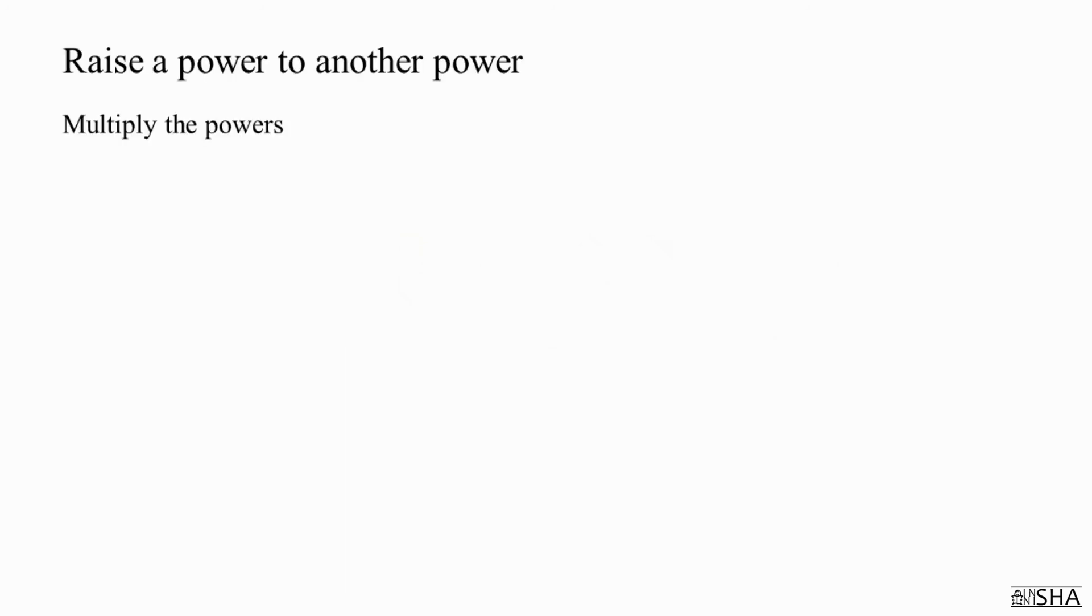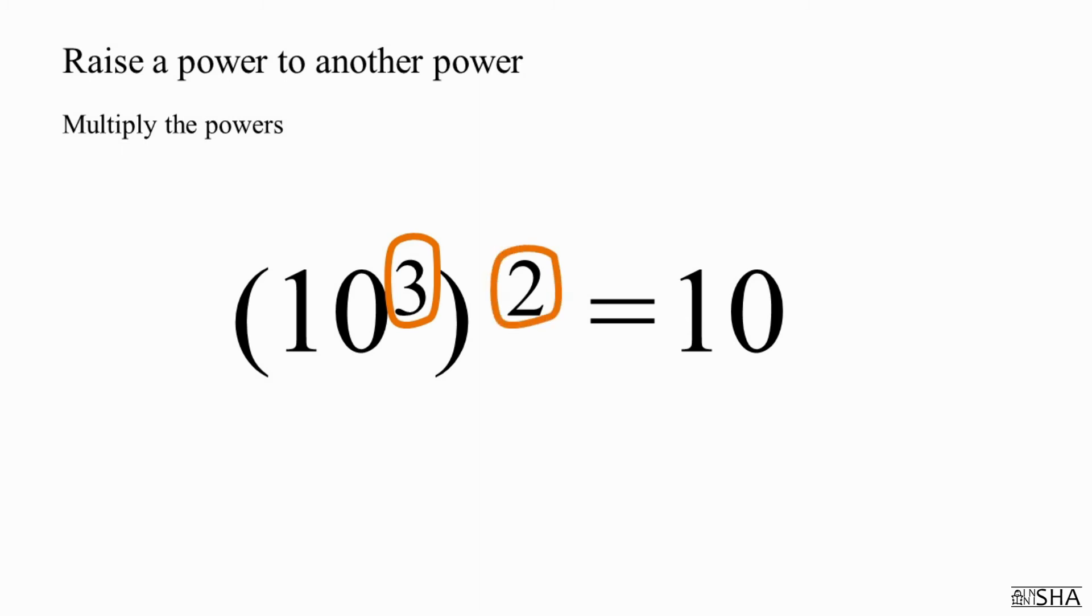And finally, let's consider what we should do, if we suddenly have to raise a power to another power. To do this, we need to multiply the powers. For example, ten to the third power raised to the second power. We rewrite the base which is ten, and multiply three by two. We get six. The answer is ten to the sixth power.